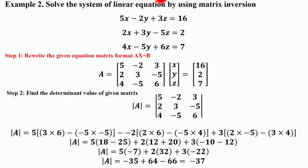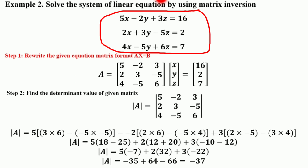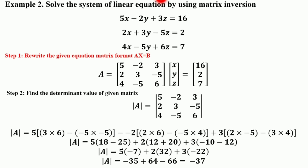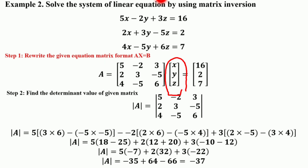Now we consider a system of linear equations with three unknown variables x, y, and z, solved by the matrix inversion method. The three equations are: 5x − 2y + 3z = 16, 2x + 3y − 5z = 2, and 4x − 5y + 6z = 7. The first step is to rewrite in matrix format AX = B. Matrix A is [5, −2, 3; 2, 3, −5; 4, −5, 6], matrix X is [x; y; z], and matrix B is [16; 2; 7].